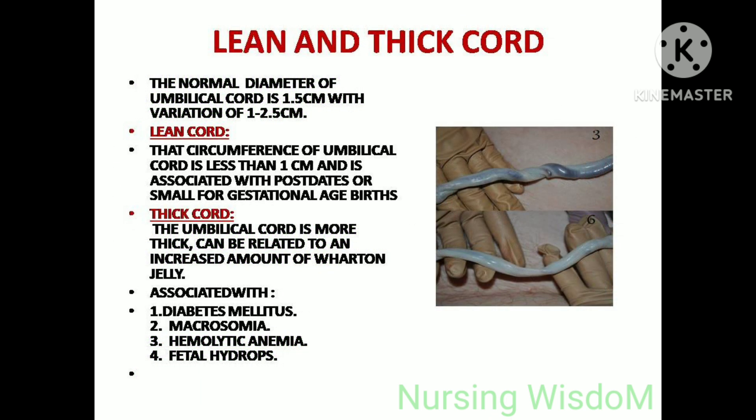Lean and thick cord: the normal diameter of the umbilical cord is 1.5 cm with a variation of 1 to 2.5 cm. Lean cord: a circumference of less than 1 cm, associated with fetal growth restriction or small for gestational age births. Thick cord: the umbilical cord is more thick and can be related to an increased amount of Wharton's jelly. It is associated with diabetes mellitus, macrosomia, hemolytic anemia, and fetal hydrops.